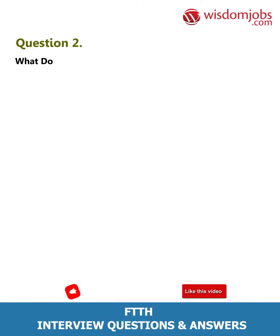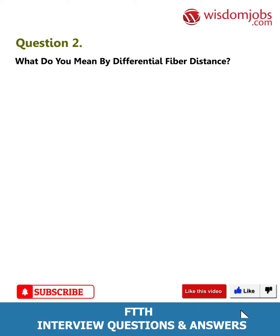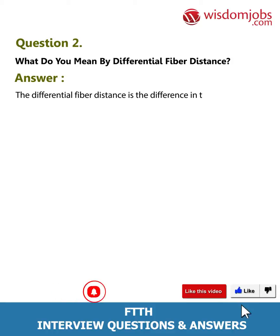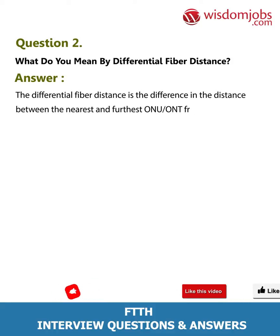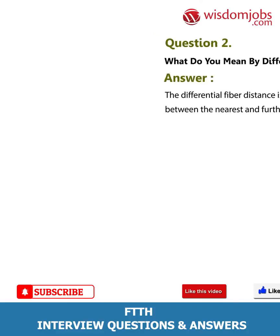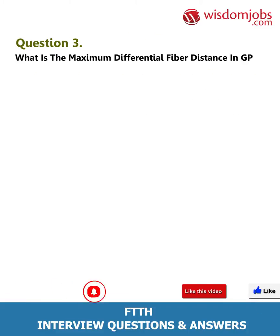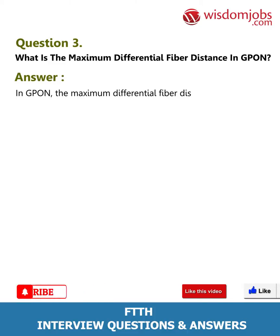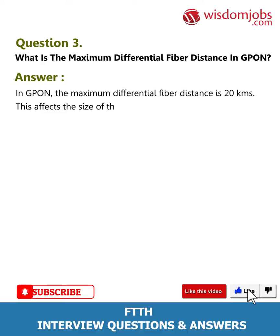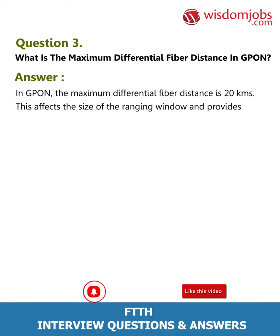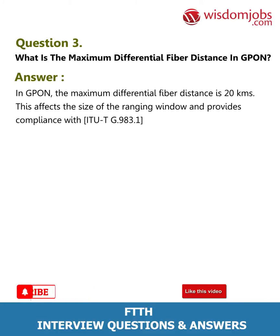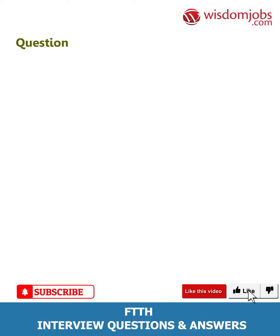Question 2: What do you mean by differential fiber distance? Answer: The differential fiber distance is the difference in distance between the nearest and furthest ONU/ONT from the OLT. Question 3: What is the maximum differential fiber distance in GPON? Answer: In GPON, the maximum differential fiber distance is 20 km. This affects the size of the ranging window and provides compliance with ITU-T G.983.1.